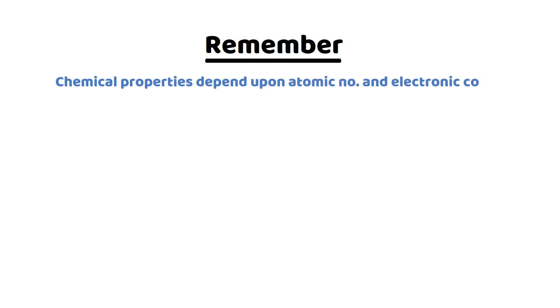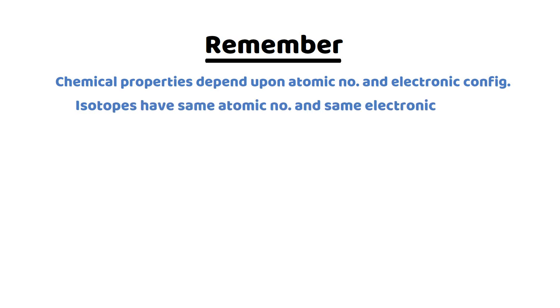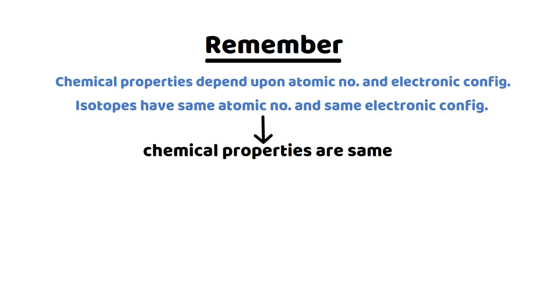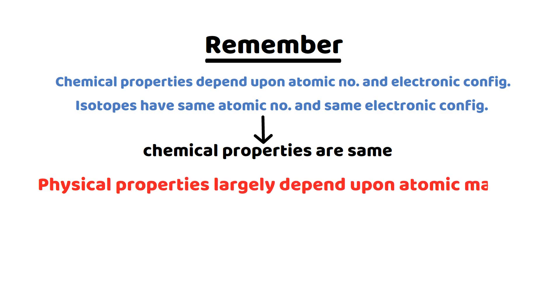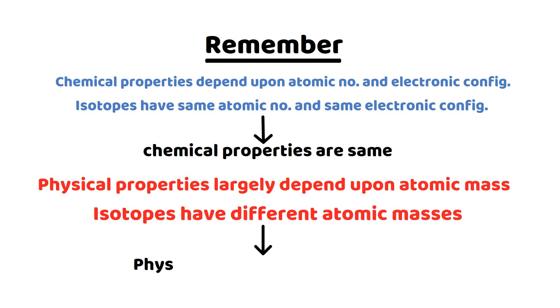Chemical properties depend upon atomic number and electronic configuration. As isotopes have the same atomic number and same electronic configuration, their chemical properties are the same. However, physical properties largely depend upon atomic mass. As isotopes have different atomic masses, their physical properties are different.